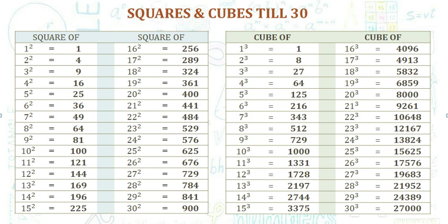23 cube 12167, 24 cube 13824, 25 cube 15625, 26 cube 17576, 27 cube 19683.